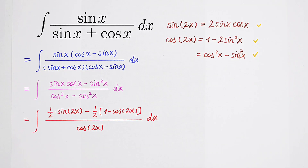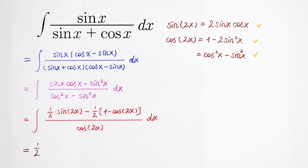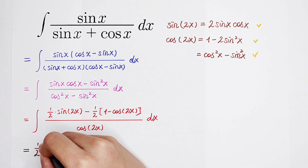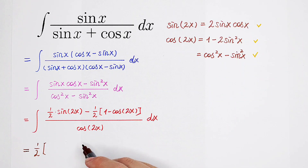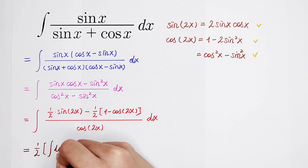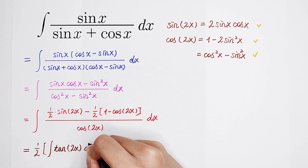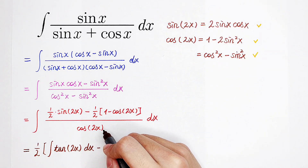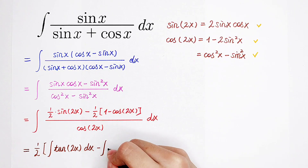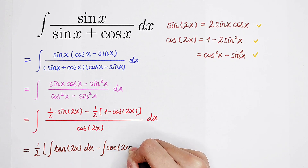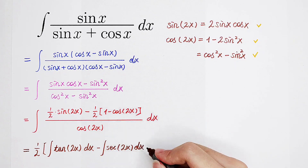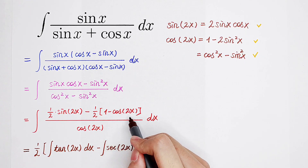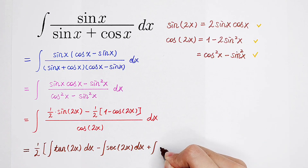Now we can integrate it. Because here is 1 over 2, we write 1 over 2 here. And 1 over 2 times sine of 2x divided by cosine of 2x is tangent of 2x. So it's the integral of tangent of 2x. Then minus 1 divided by cosine of 2x, which is secant of 2x — so minus the integral of secant of 2x. Then plus: cosine of 2x divided by cosine of 2x is 1, so plus the integral of 1.